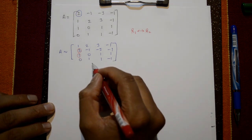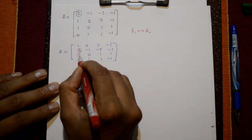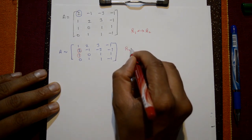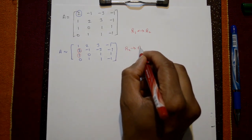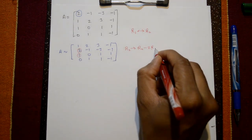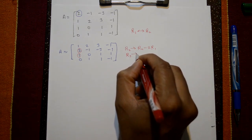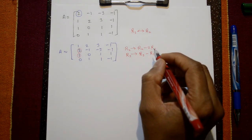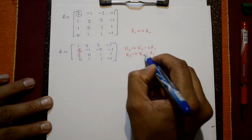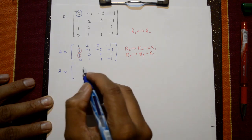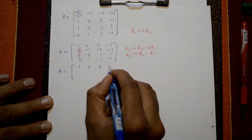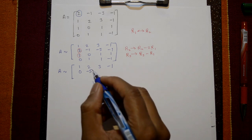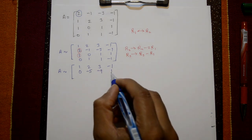R4 already has 0 in that position. We apply R2 = R2 - 2R1 and R3 = R3 - R1 to zero out column 1 below the pivot. The first row stays unchanged. Second row R2 = R2 - 2R1 gives: 0, -5, -9, 1.